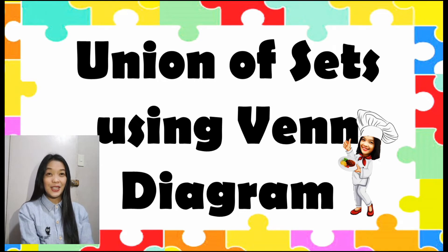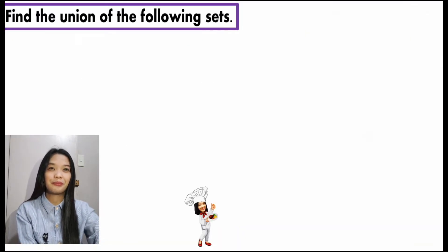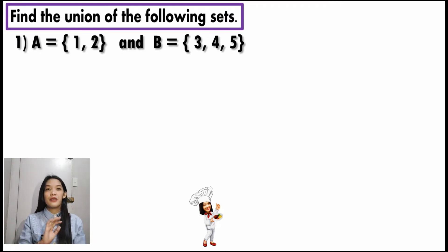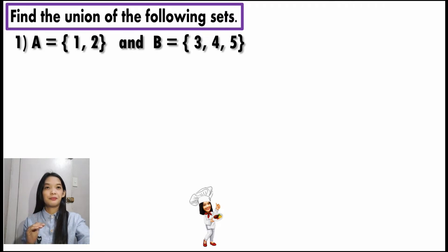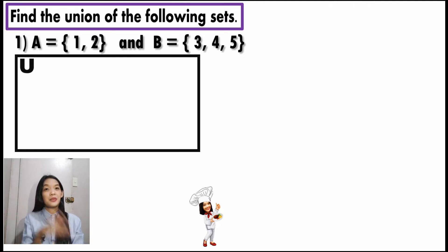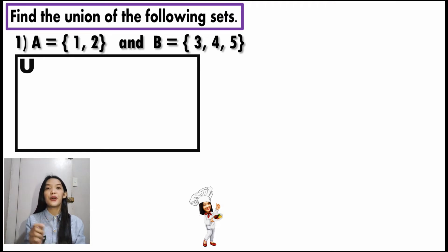And now let us study union of sets using Venn diagrams. Find the union of the following sets. Set A has the elements 1 and 2, and set B has the elements 3, 4, and 5. From our last lesson on universal set and subset, we studied that we can use a rectangle to represent the universal set and circles to represent the subsets. Observe — are there common elements between A and B? That's correct, there are no common elements. And therefore, A is not a subset of B and B is not a subset of A.